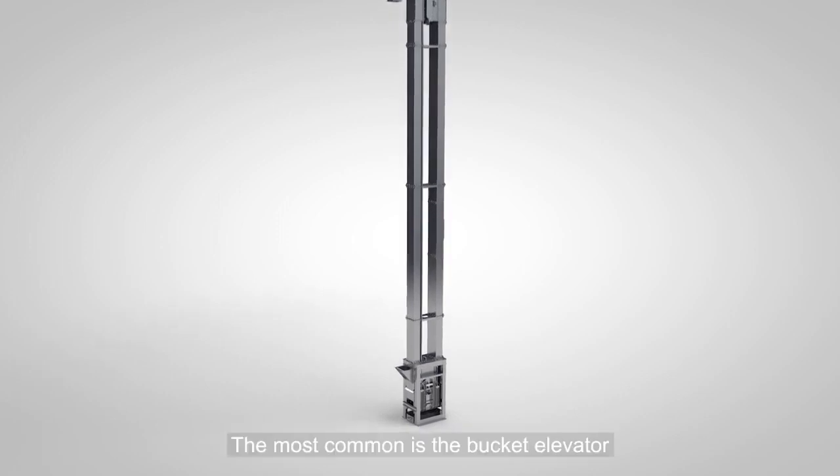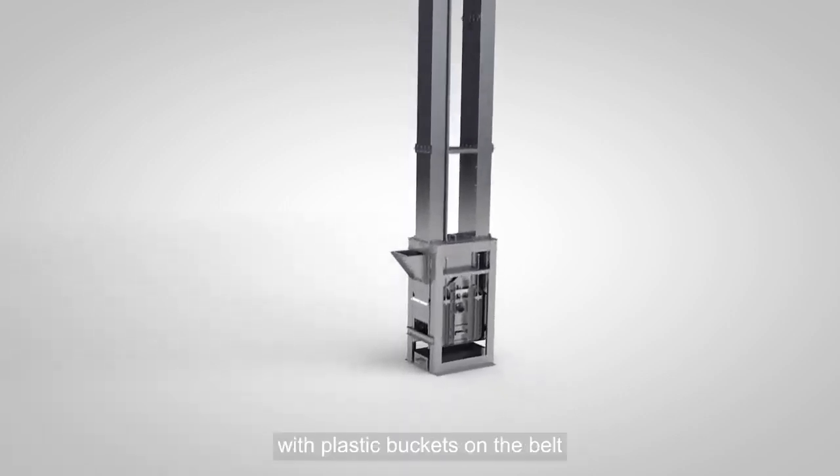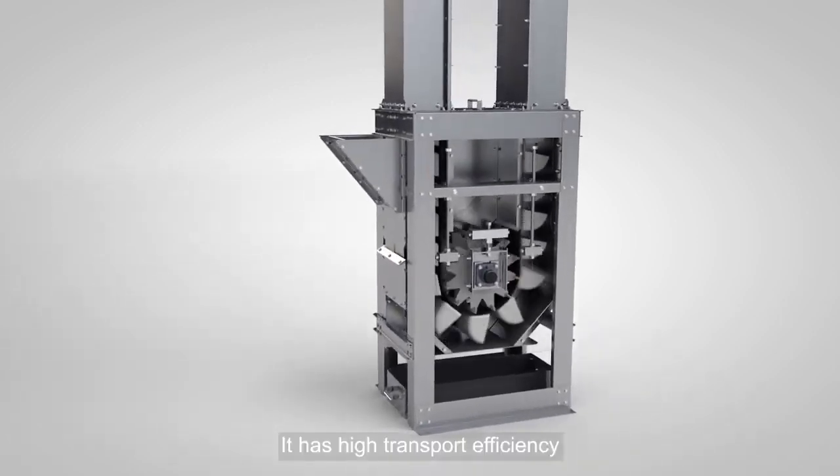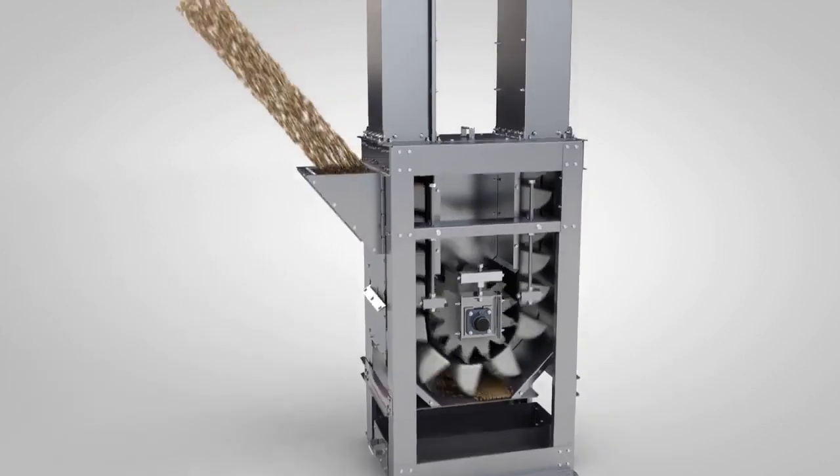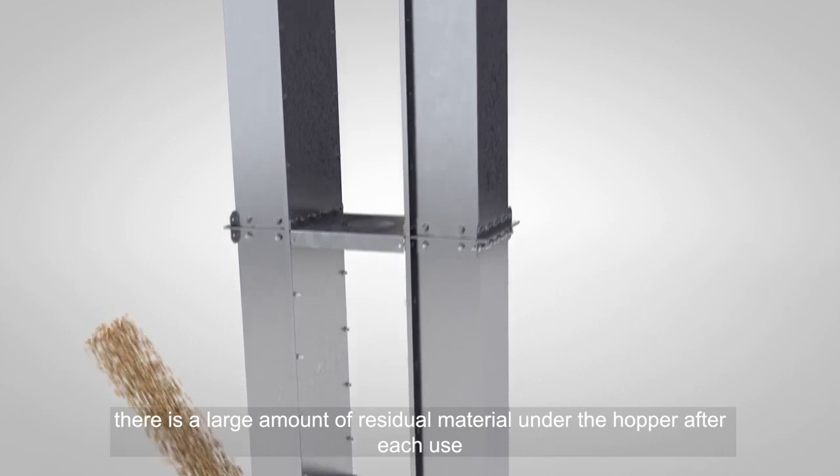Bucket Lift Conveyor: The most common is the bucket elevator. It was made of carbon steel with plastic buckets on the belt. It has high transport efficiency, but the disadvantage is that there is a large amount of residual material under the hopper after each use.